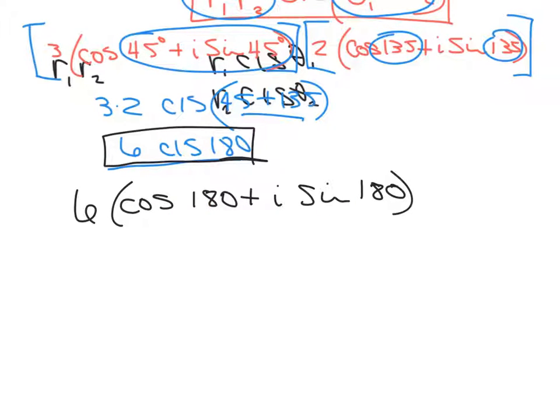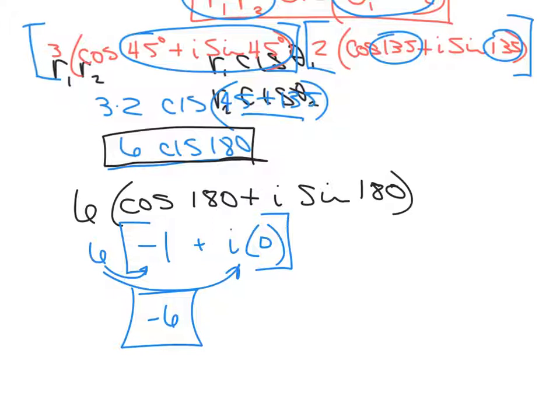Cosine of 180 degrees is in your handy-dandy calculator. You find it's negative 1. And i sin 180 is 0. Then this whole thing is multiplied by 6. So we distribute and we get negative 6 for our answer. That's all we're doing.